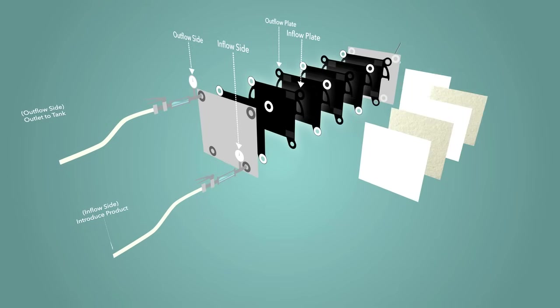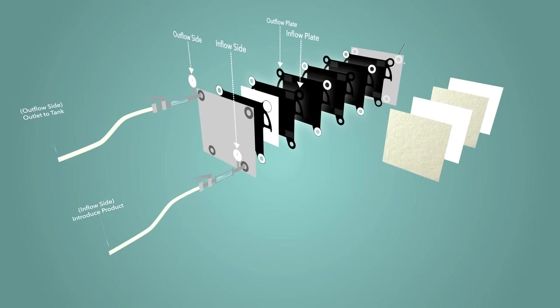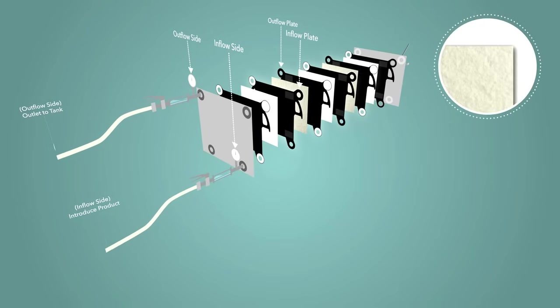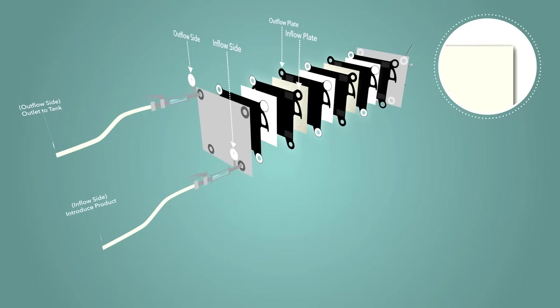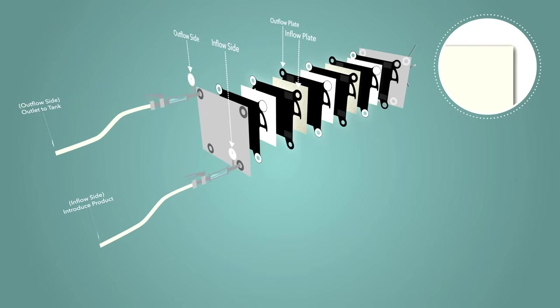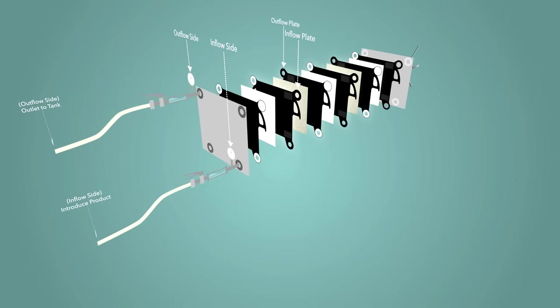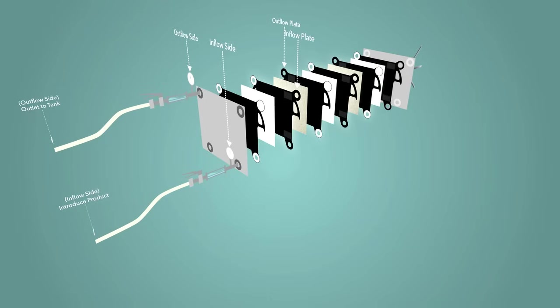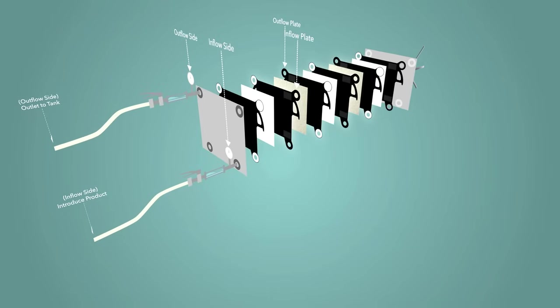Insert one filter sheet in between each plate of the filter. The rough side should be facing the inflow plate and the smooth side should be facing the outflow plate. By doing this, you will notice that the direction of the sheet will alternate from one plate to the next.